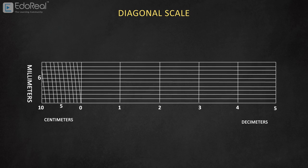For example, if we take a decimeter as the main unit, its immediate two subdivisions are centimeter and millimeter.